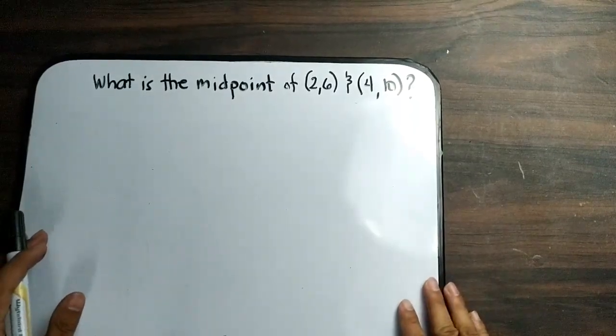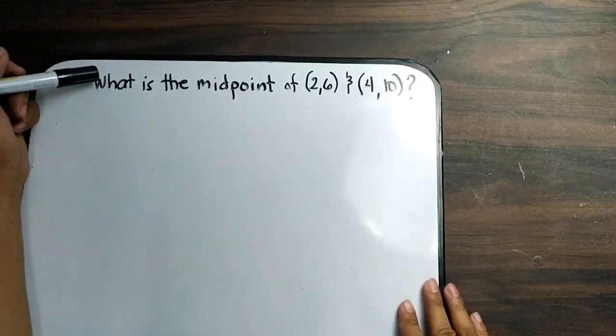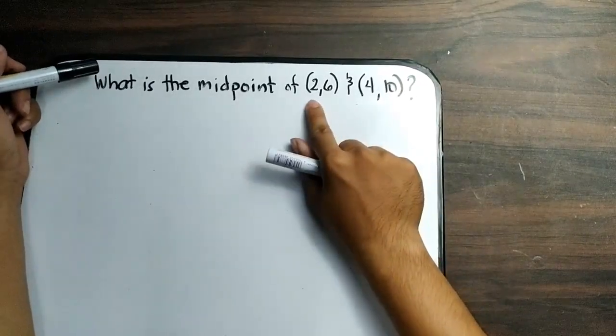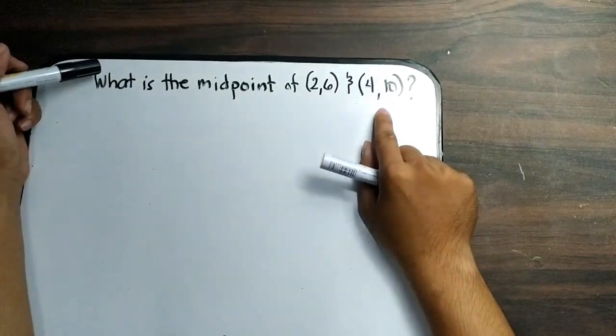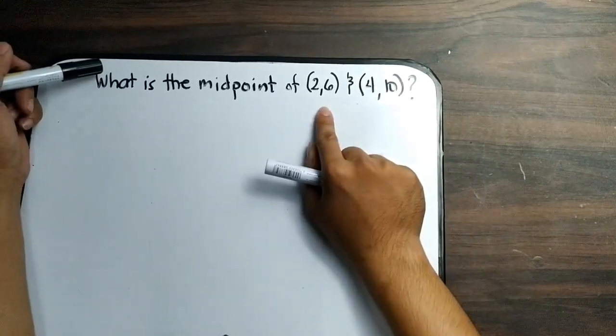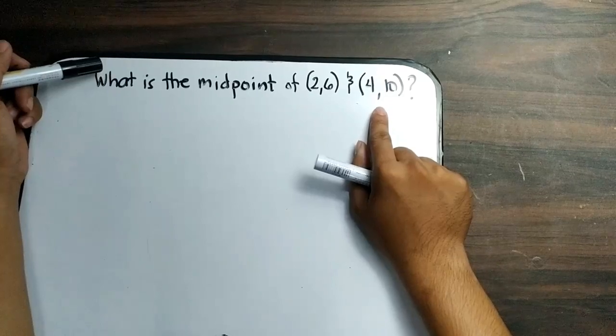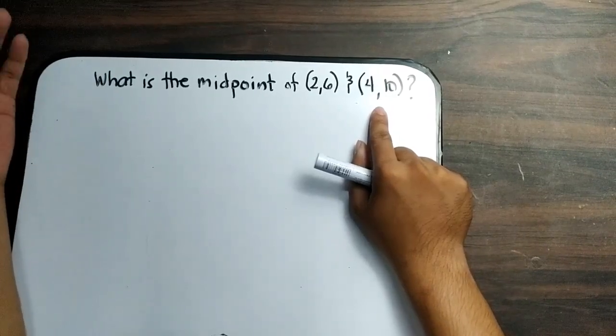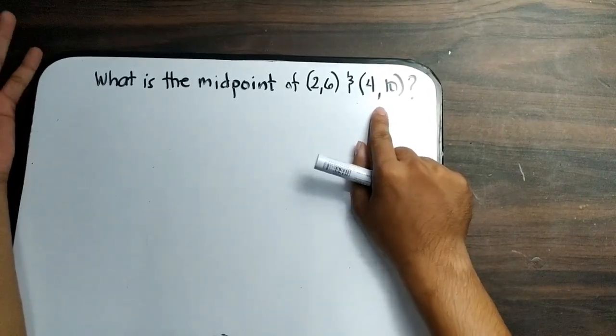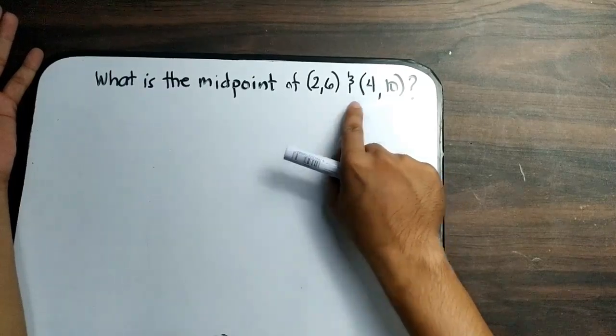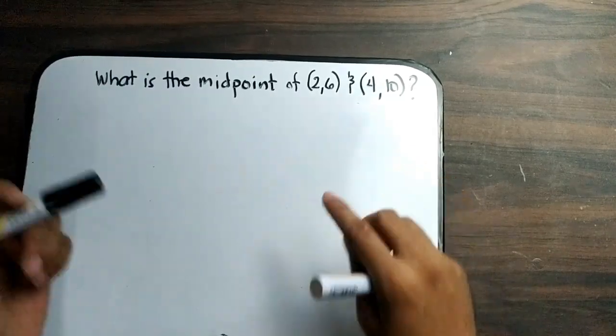Now, we have here the question: what is the midpoint of (2,6) and (4,10)? (2,6) is a point in a Cartesian coordinate plane, same with (4,10). How are we going to find the middle point between these two coordinates? What is the formula for midpoint?